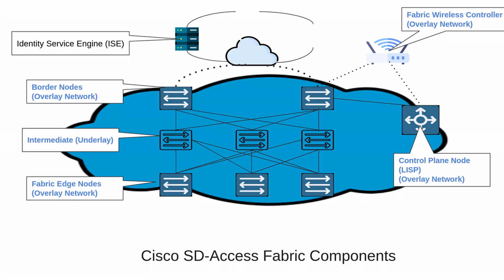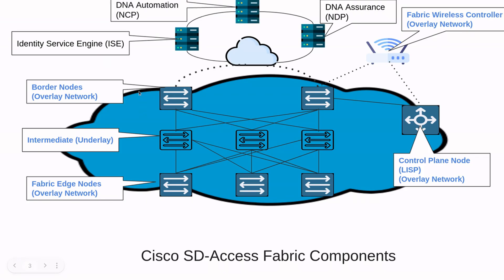Next, we have the NDP, which is the DNA Assurance. The NDP is a data collection, analytics, and assurance subsystem that is integrated directly into Cisco DNA Center. After that, we have DNA Automation, and this is a subsystem integrated directly into Cisco DNA Center that provides all the underlay and fabric automation and orchestration services for the physical and network layers.